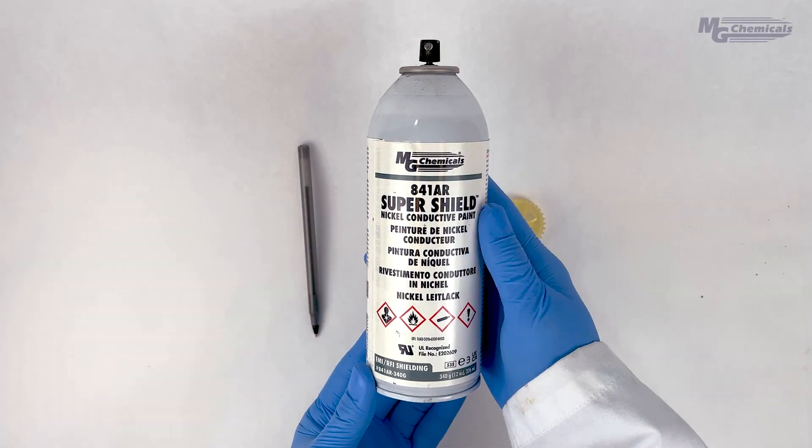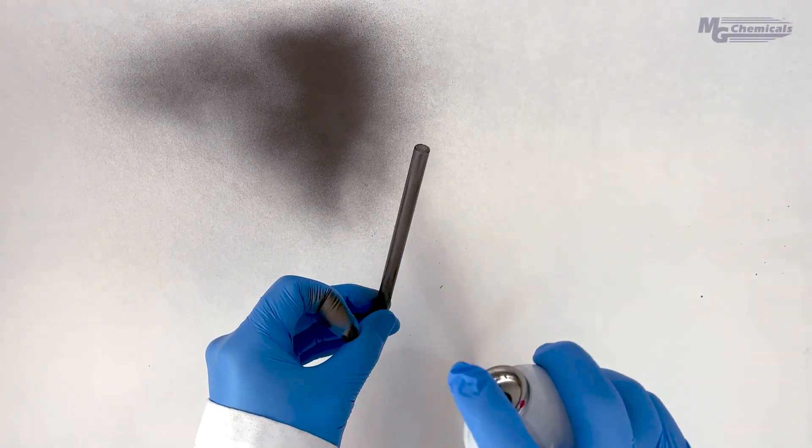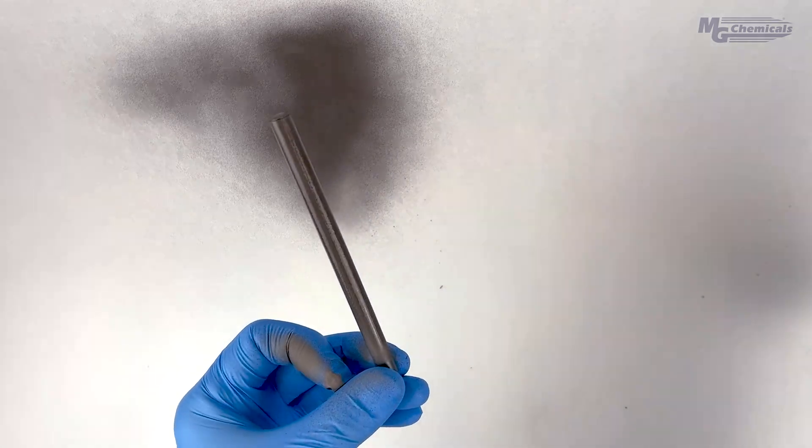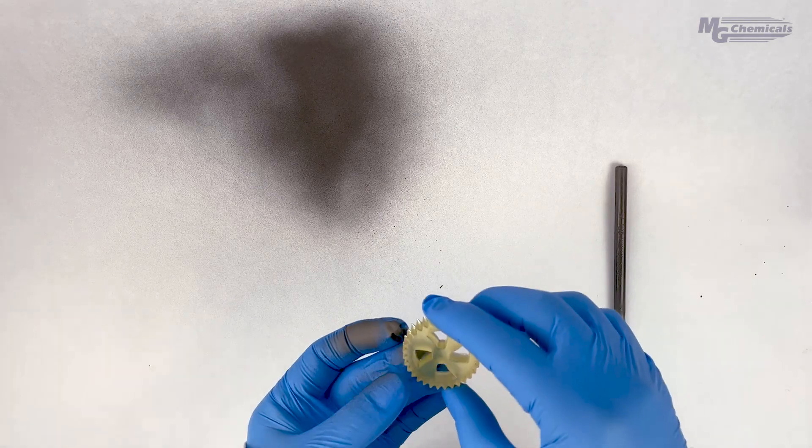Now coat the parts with an electrically conductive paint like our 841AR. Paint is an ideal solution for complex parts like cams, which have many edges and fine details.